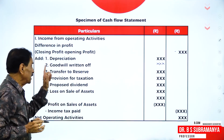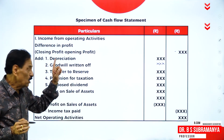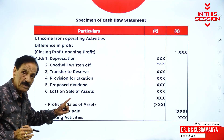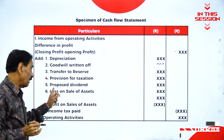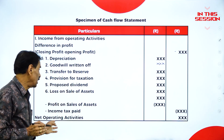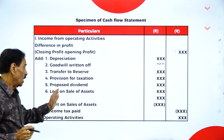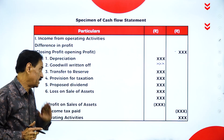Add back: depreciation, goodwill written off, transfer to reserve, provision for taxation, proposed dividend.